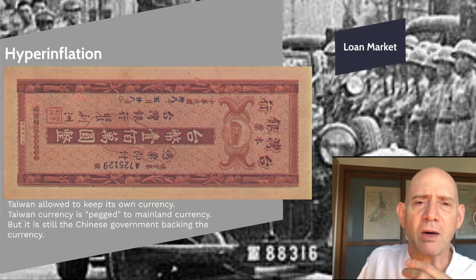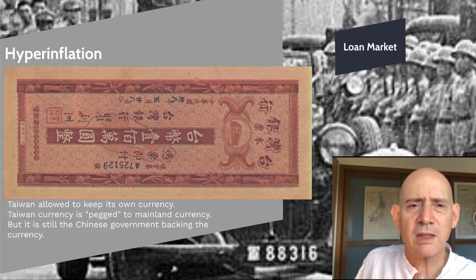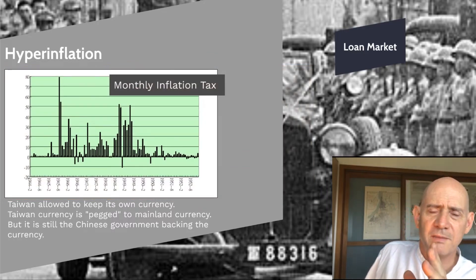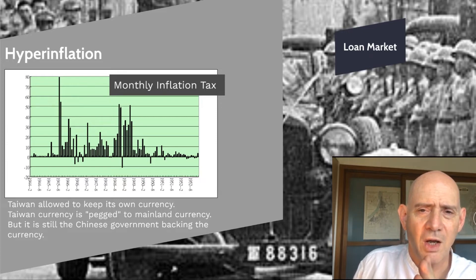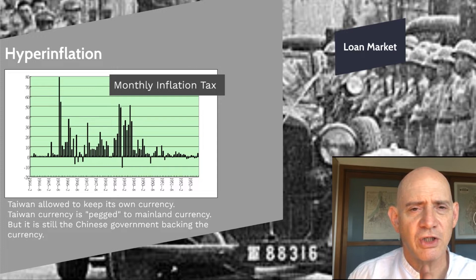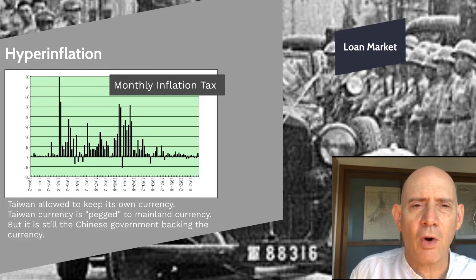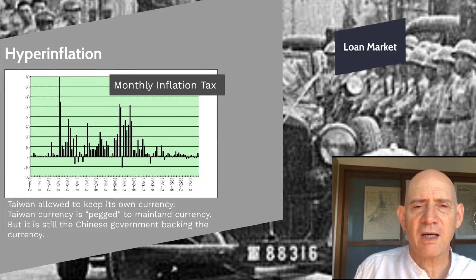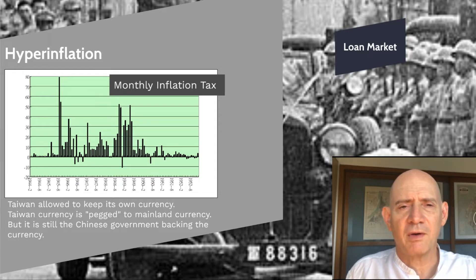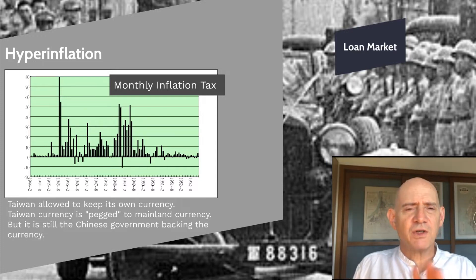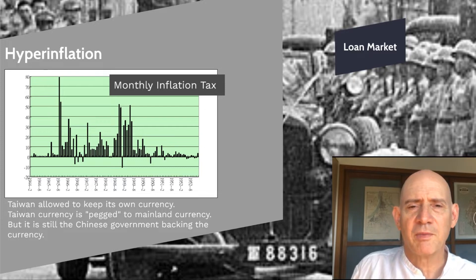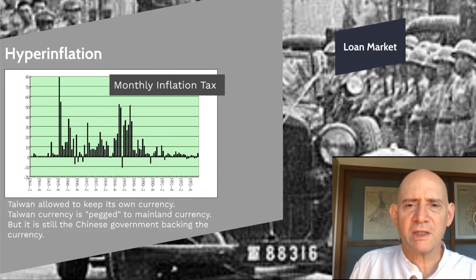This is a Taiwanese bill — a bill for a million dollars — the sort of thing you would see during this period. This is the monthly inflation tax, showing what happens during the Taiwan inflation as far as the currency's value is concerned. If a currency drops in value by 50% over the month, that's how we define hyperinflation — at least one month with a fall in currency value of over 50% — and you're officially classified as undergoing hyperinflation. There are about four months where Taiwan exceeds this level of inflation.